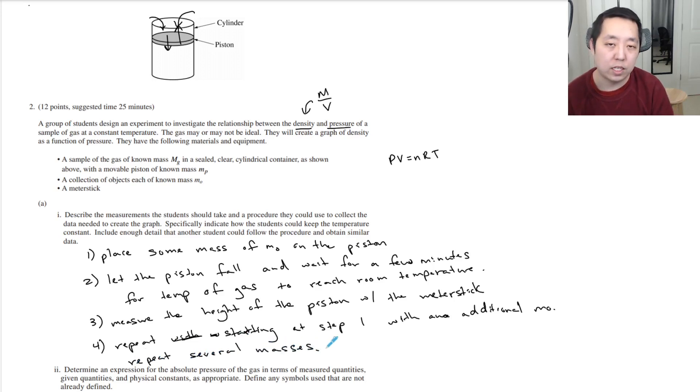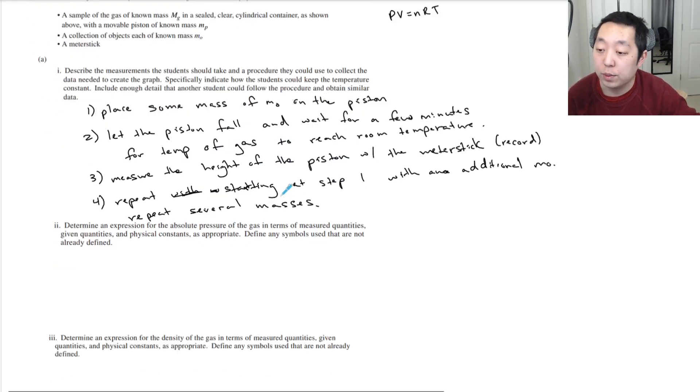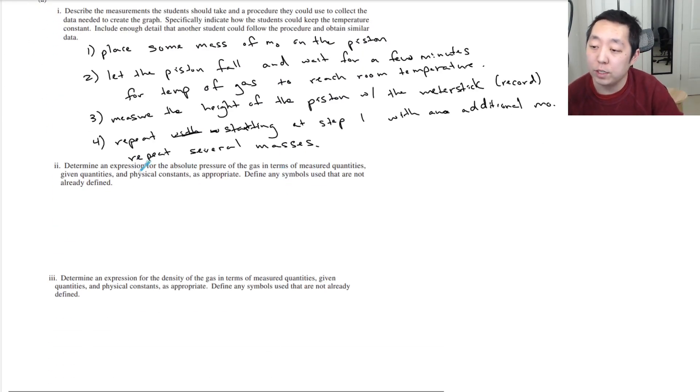That's the basic idea. So we're going to record this. By measuring the height, you can compute the volume, because if you know the size of this piston, you can calculate the volume from the height. It's like the area of the base times the height. I think I did it in number two, where I said wait a few minutes for the temperature gas to reach room temperature. I think that's pretty good.